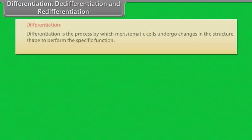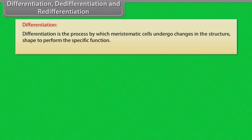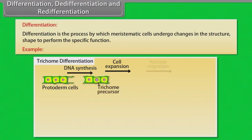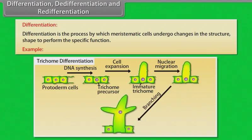Differentiation, de-differentiation, and redifferentiation. Differentiation is the process by which meristematic cells undergo changes in the structure, shape to perform specific functions. For example, after the DNA synthesis of the protoderm cells, cell expansion takes place and it forms immature trichome. After that, nuclear migration takes place and then branching occurs and then it reaches to maturation stage.